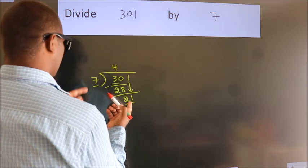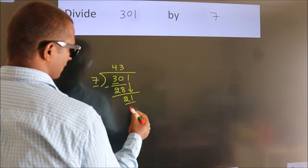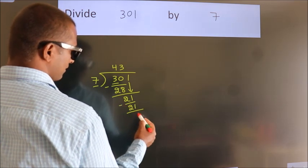When do we get 21 in the 7 table? 7 threes is 21. Now we subtract and we get 0.